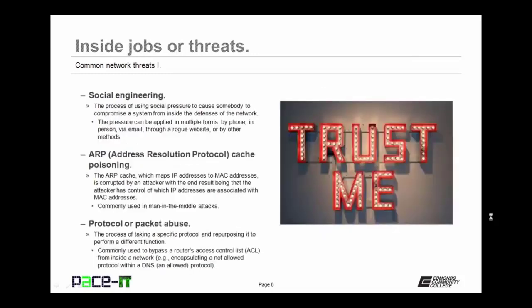Then there is social engineering — the process of using social pressure to cause somebody to compromise a system from inside the defenses of the network. Social engineering pressure can be applied in multiple forms: an employee can receive a phone call from somebody claiming to be from the IT department asking for their credentials, it may occur in person, through email, or through a rogue website. The best defense is through end-user education — training your end users to resist social engineering.